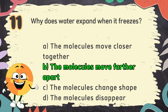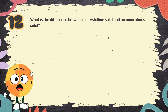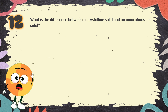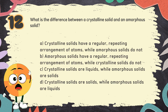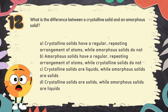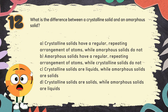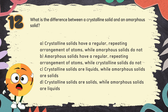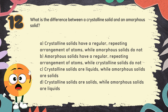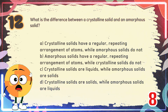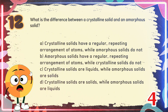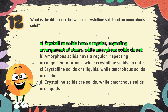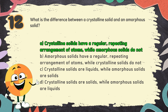Number 12. What is the difference between a crystalline solid and an amorphous solid? The choices are: A. Crystalline solids have a regular, repeating arrangement of atoms while amorphous solids do not, B. Amorphous solids have a regular repeating arrangement of atoms while crystalline solids do not, C. Crystalline solids are liquids while amorphous solids are solids, D. Crystalline solids are solids while amorphous solids are liquids. The correct answer is A. Crystalline solids have a regular, repeating arrangement of atoms while amorphous solids do not.